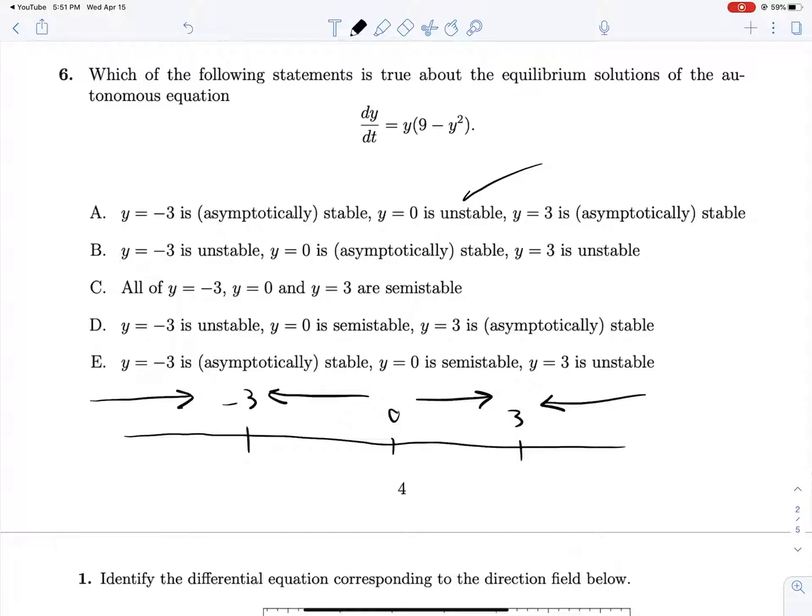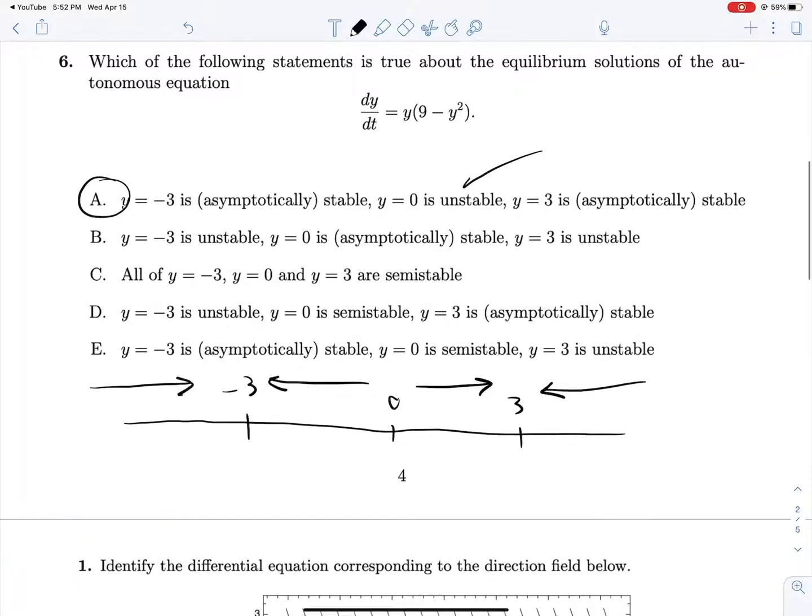And then both negative 3 and 3 are asymptotically stable because if you start in their vicinity, in this zone of control, any of these really, so the whole number line in fact, you will end up flowing towards one of the two solutions, whichever you're closer to, as time goes to infinity. So A should be a correct answer.